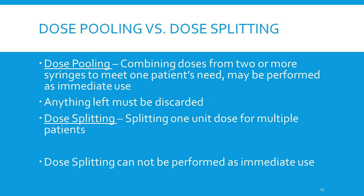Dose pooling versus dose splitting: dose pooling combines doses from two or more syringes to meet one patient's need and may be performed as immediate use — anything left must be discarded. Dose splitting means splitting one unit dose for multiple patients. Dose splitting cannot be performed as immediate use and would require a PEC or laminar flow hood.